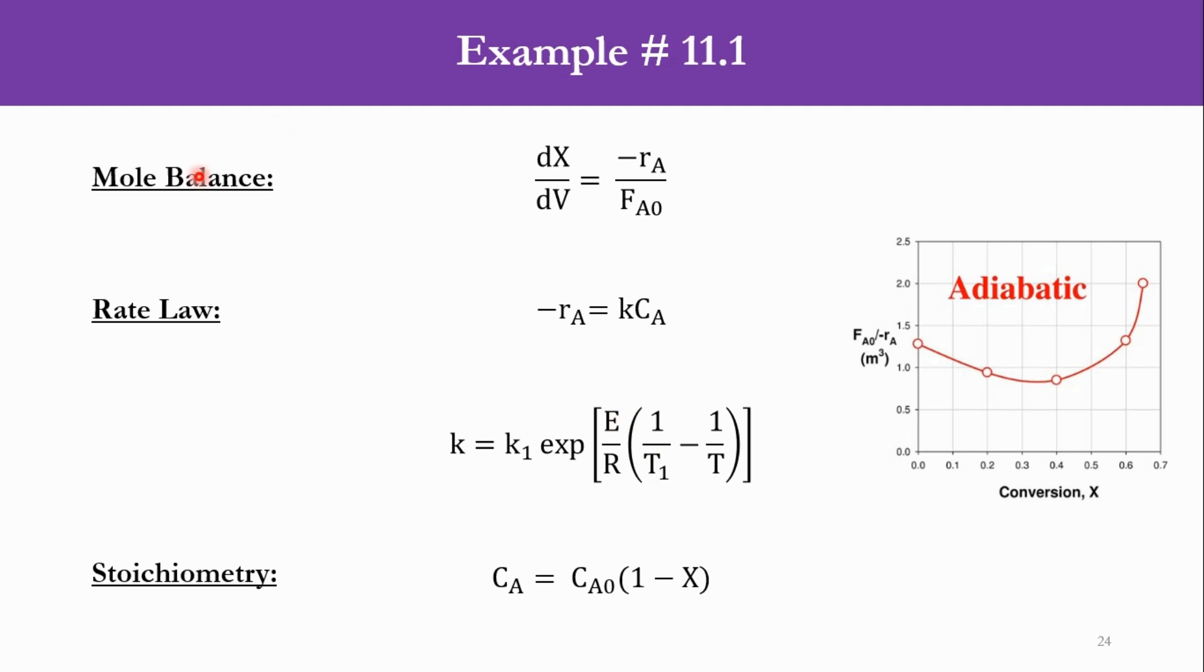The mole balance for the PFR remains the same as for the isothermal system: dX/dV = -rA/FA0. This has nothing to do with isothermal or non-isothermal nature. Similarly, the rate law is either elementary or non-elementary, independent of isothermal conditions. So we write -rA = k·CA for this irreversible first-order reaction.